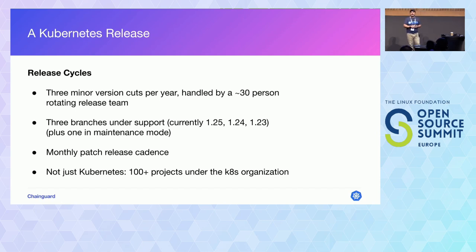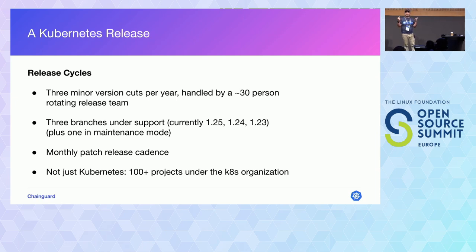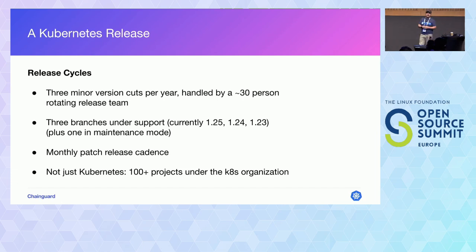We have two kinds of releases. One monthly release involves patch releases of branches under maintenance, typically involving high-critical security patches and bug fixes. We also have the big release that happens every four months, powered by a team of around 30 to 35 people that sign up every cycle to be part of the release team. They handle everything from bug triage to communications, writing release notes, and tracking enhancements. Anybody can join, no matter their technical level.